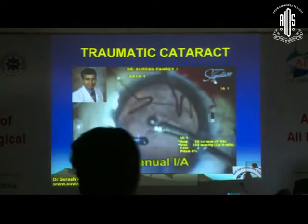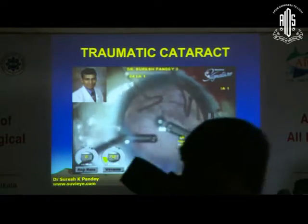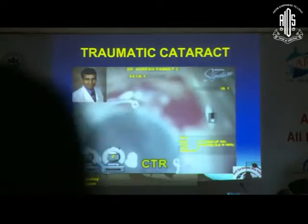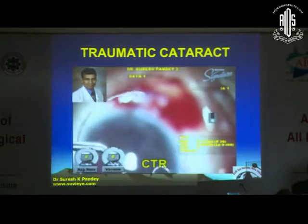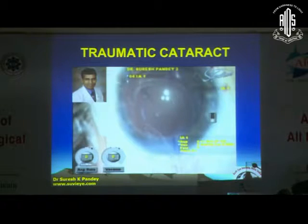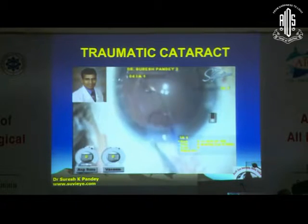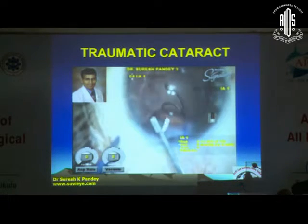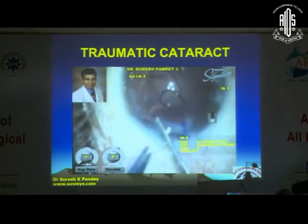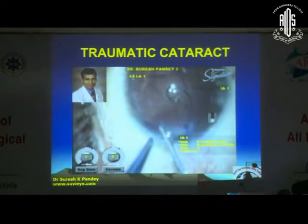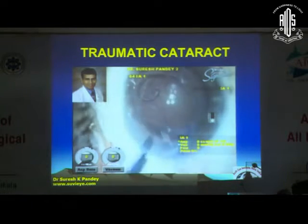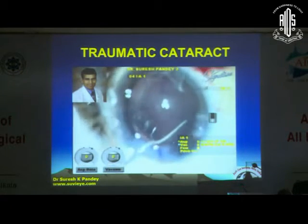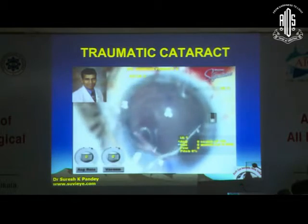So the cataract surgery nucleus emulsification was done, and after removing the cataract and the cortex, we implanted the capsule tension ring. The capsule tension ring is very important in these cases to manage the zonular adhesions.